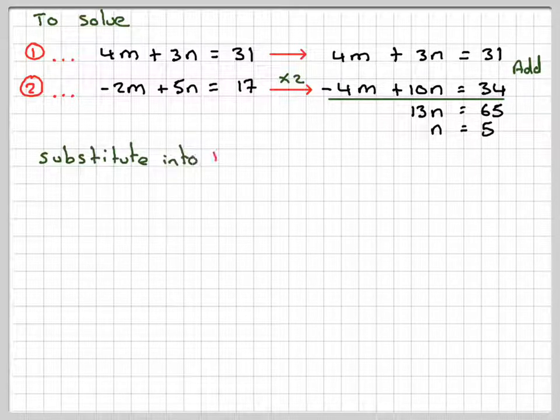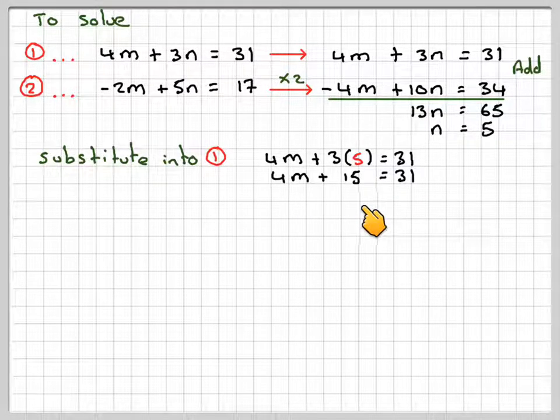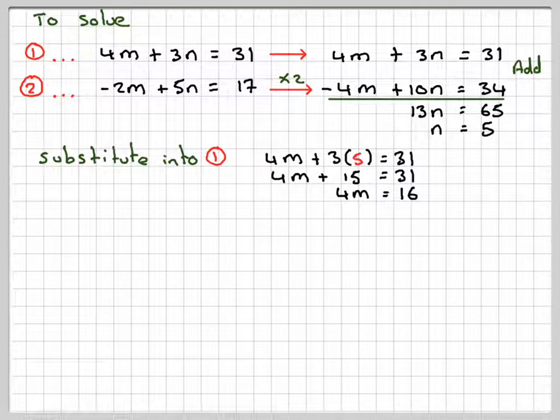Substitute into equation 1. So 4M plus 3 times 5 is 31. That would give 4M plus 15 equals 31. 4M is 16. M equals 4.